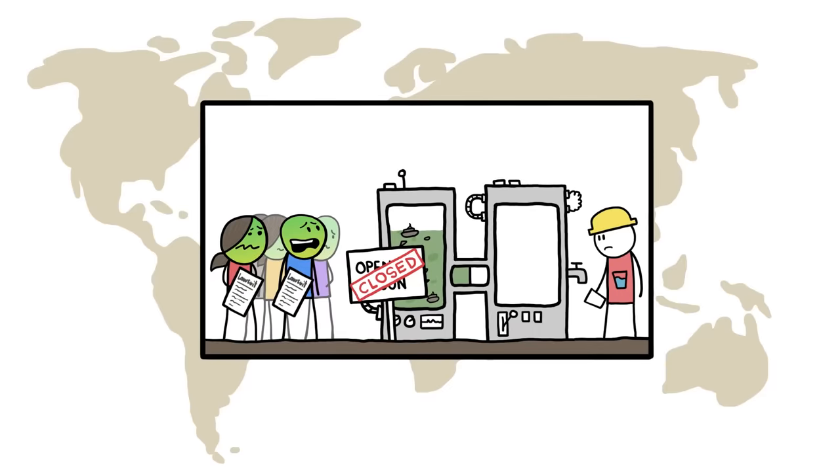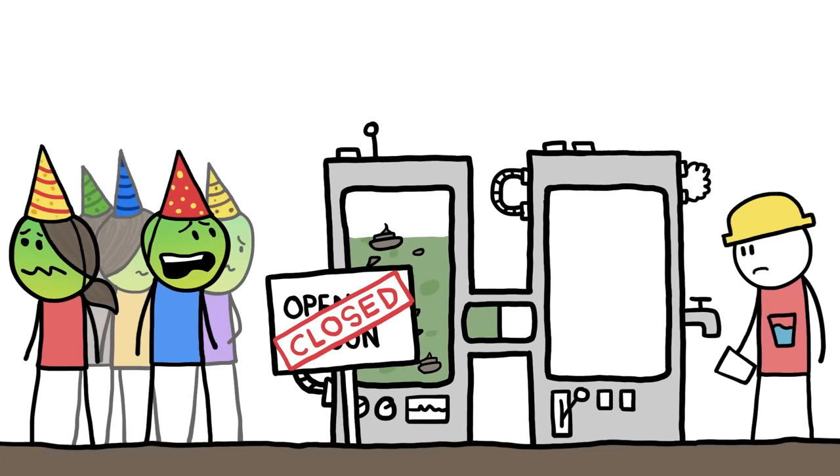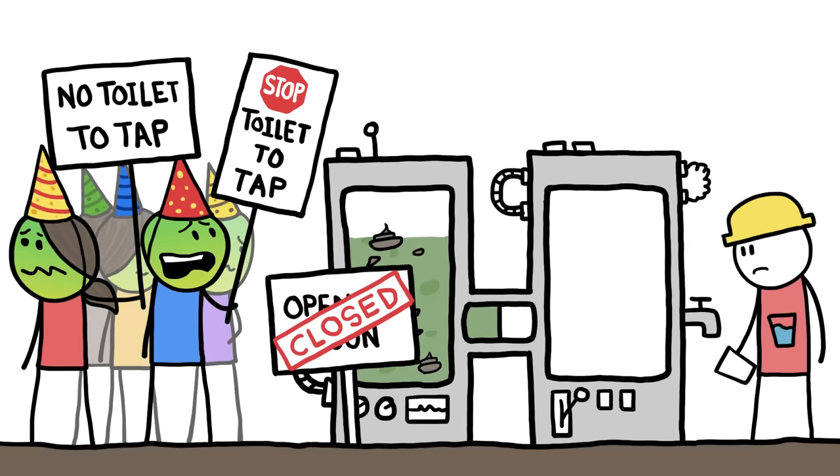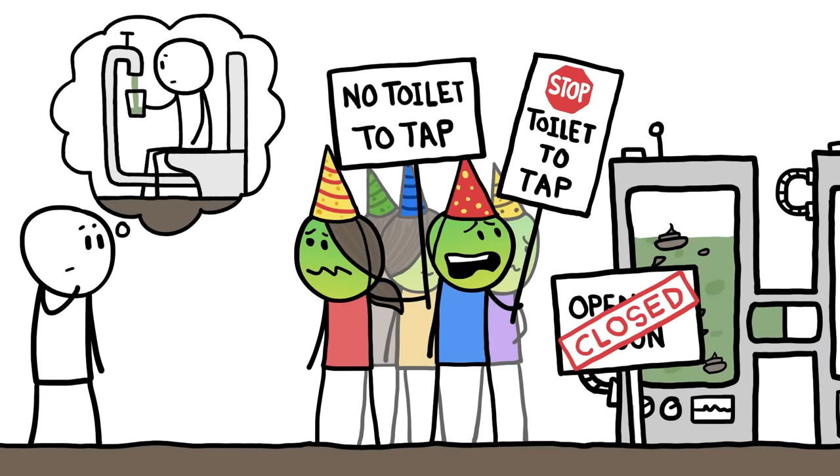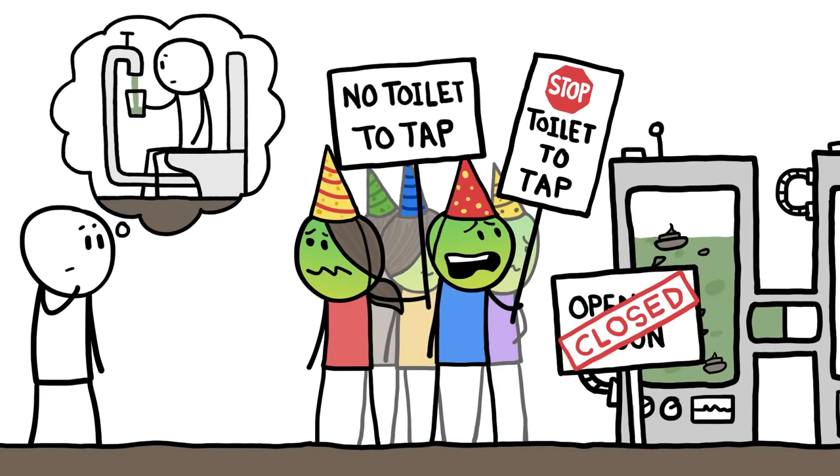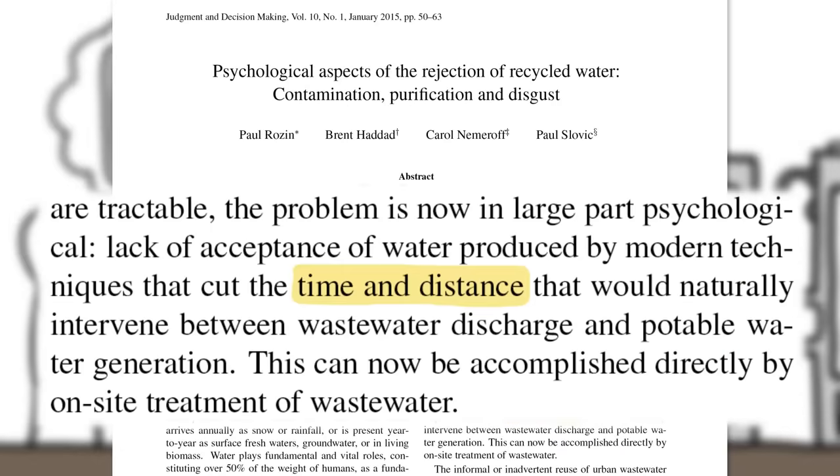Public backlash has killed water recycling plants in other places too, likely in part because party poopers called the water toilet to tap, which made it sound like there was nothing between the pooping and the drinking. Studies show that time and distance are some of the best antidotes to disgust.